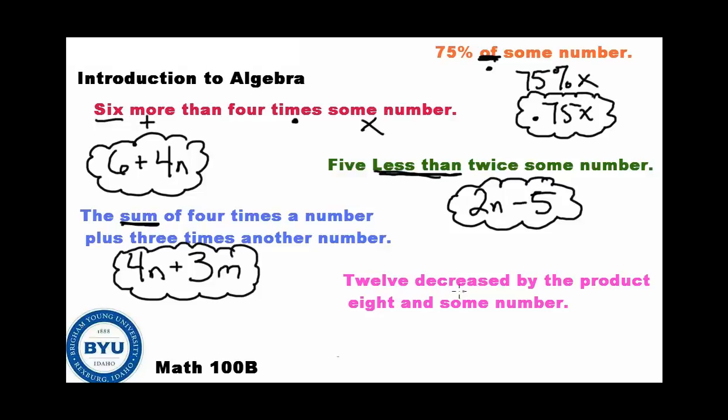12 decreased, well, decrease means subtraction by the product, ooh, that's multiplication of eight and some number. So 12 is being decreased by eight and some number. So those are the translations you should have got for those five problems. How'd you do? Hopefully well. There's one last thing we want to talk about here in this lesson. Let me clear the board and we'll get to it.